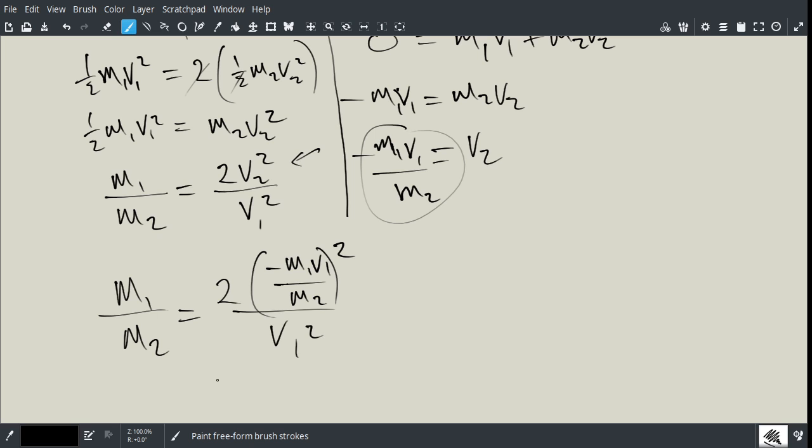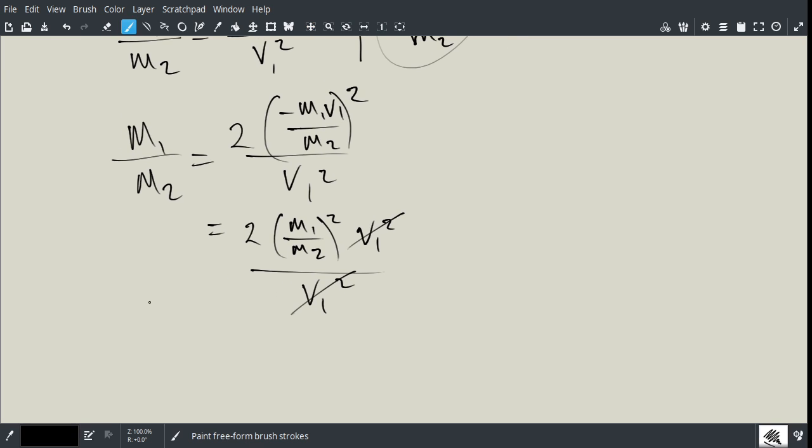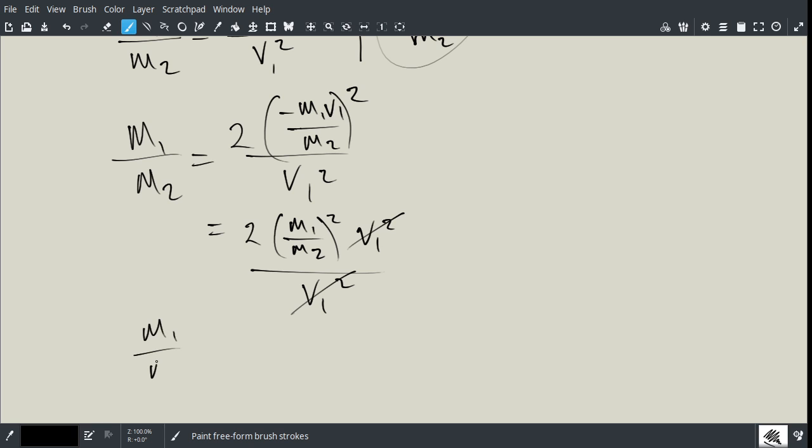Now, that's going to give me negative M1 squared divided by M2 squared. The negative disappears, so it's just two times M1 divided by M2 all squared. And then we have V1 squared divided by V1 squared. Now, you notice the V1 squareds disappear, and so now what we have is we just have M1 all over M2 is equal to two times M1 all over M2 squared.